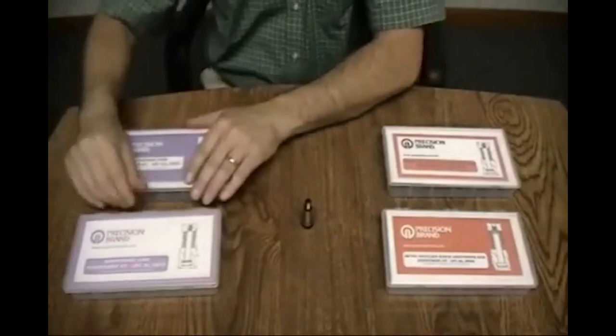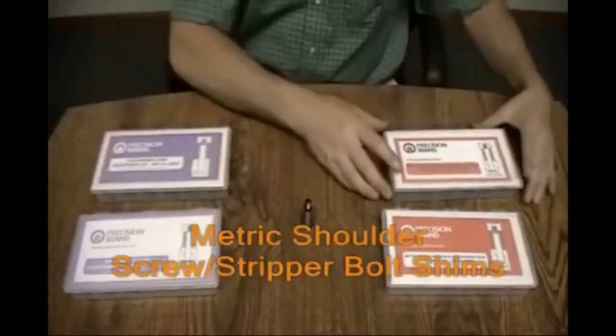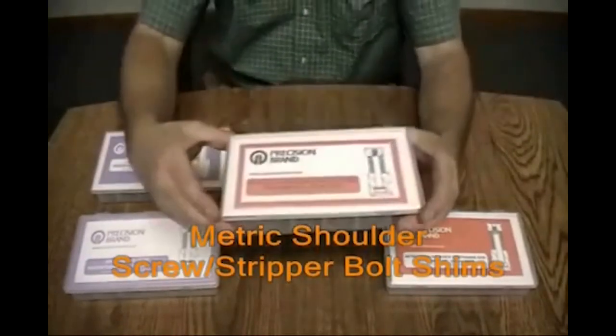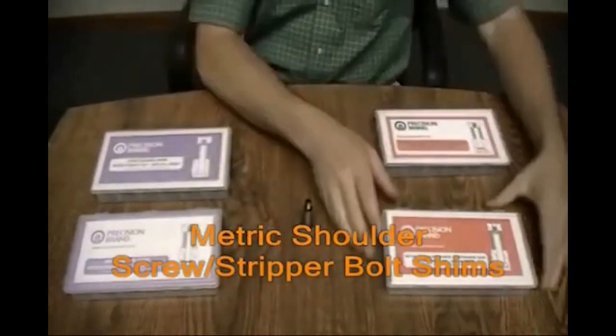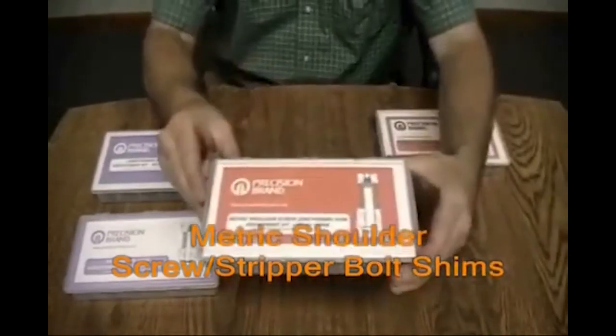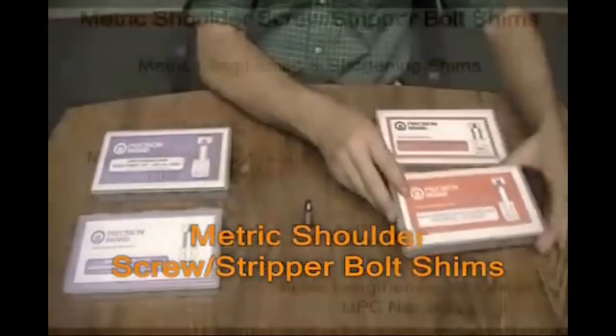And since metric shoulder screws are available in fewer lengths, Precision Brand has added metric varieties of these shims for both the lengthening and shortening styles.